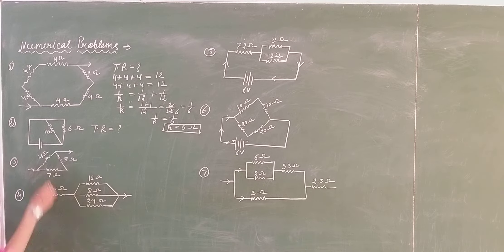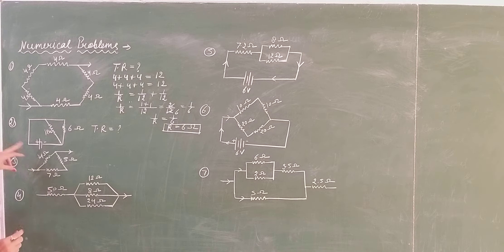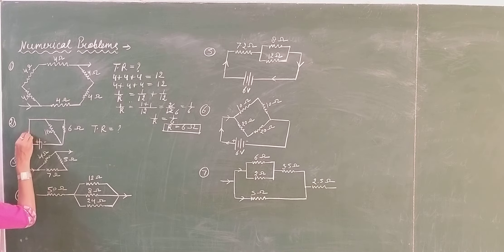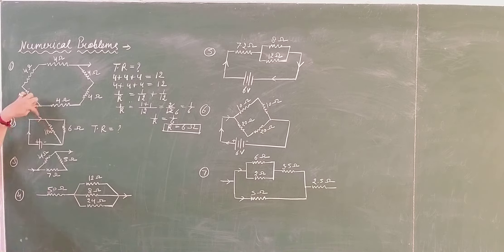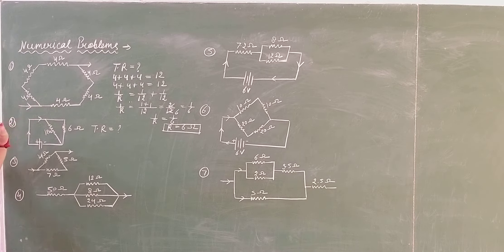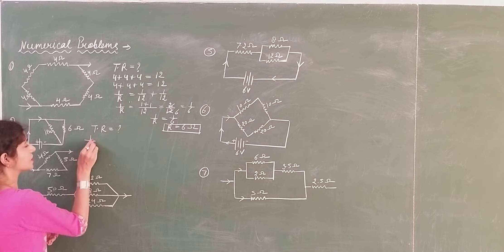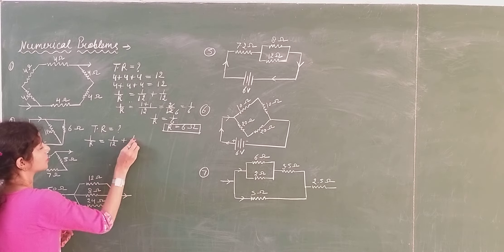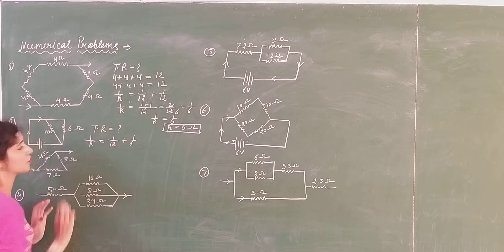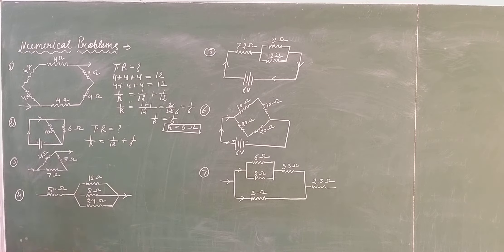Now let's talk about this combination. This is the EMF of the cell, so current will start to flow from this terminal and will divide into two combinations. So 6 ohm and 12 ohm become parallel. The resistance is found using 1 over 12 plus 1 over 6. In this way you can find out the final answer — the calculation you can do yourself, but here I am telling you how the combination is identified.